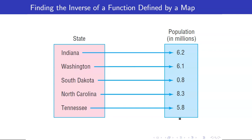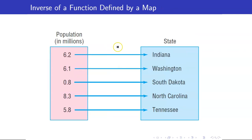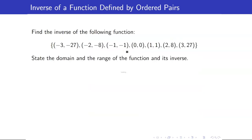We begin with finding inverses of functions represented by maps or sets of ordered pairs. I have a function defined by this map. Clearly, this is one-to-one. What would be the inverse of this function? These two sets will just be interchanged — you will now start with population in millions going to the state. For a set of ordered pairs, first check whether it is one-to-one. This is one-to-one because all of the x-coordinates are distinct and all the y-coordinates are distinct as well.